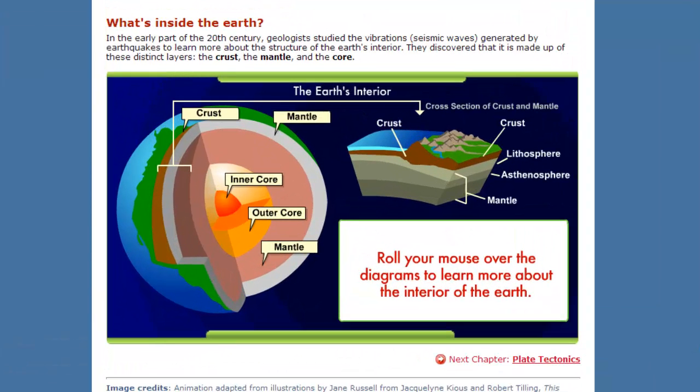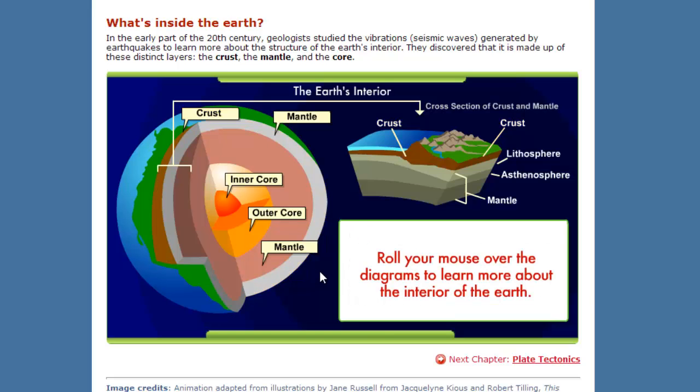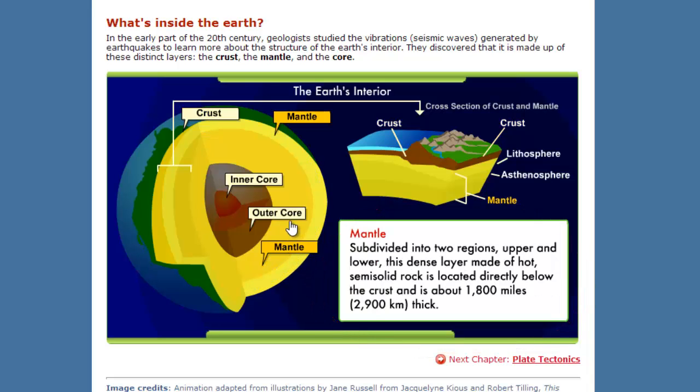All right this is from the Interactives Dynamic Earth website and you can see as I move the mouse over the different areas it highlights a different part of the earth. So we've got the crust there and then off to the right it gives us a little description about the crust being hard and rigid. It's the earth's outermost and thinnest layer only a few miles thick. Then we have the mantle which makes up most of the earth subdivided into two regions, the upper and lower. This dense layer is made of hot semi-solid rock located directly below the crust and is about 1,800 miles thick.